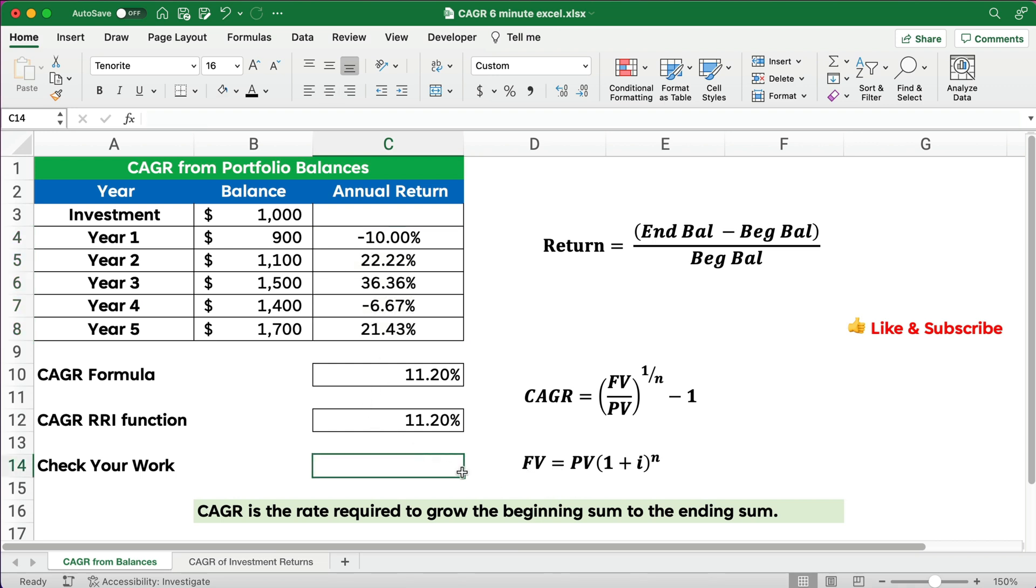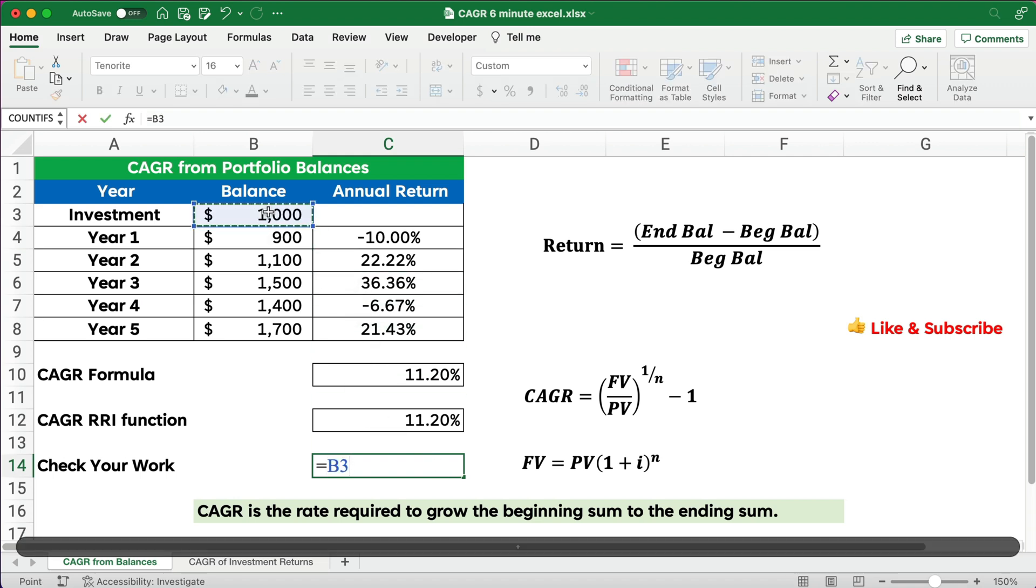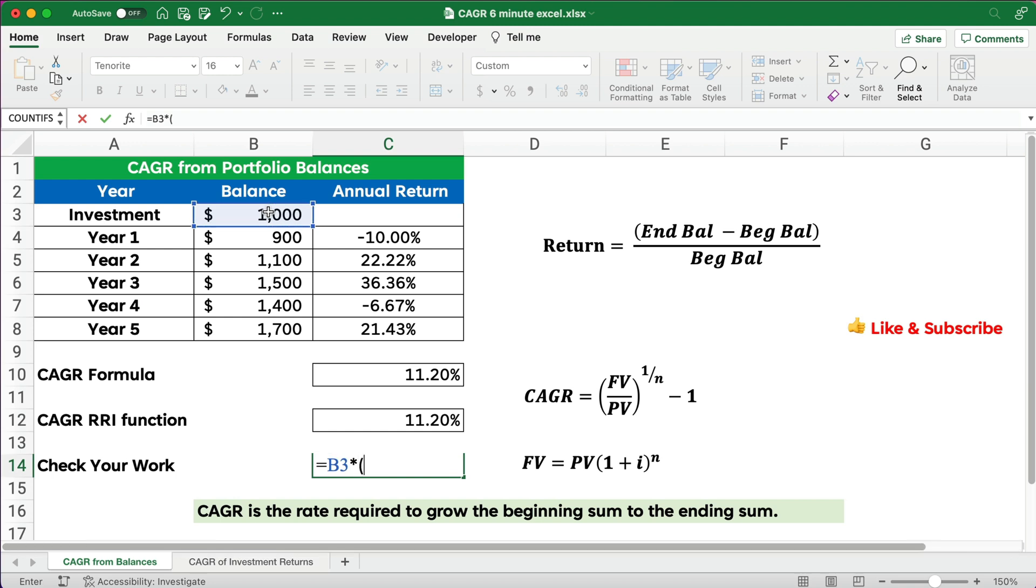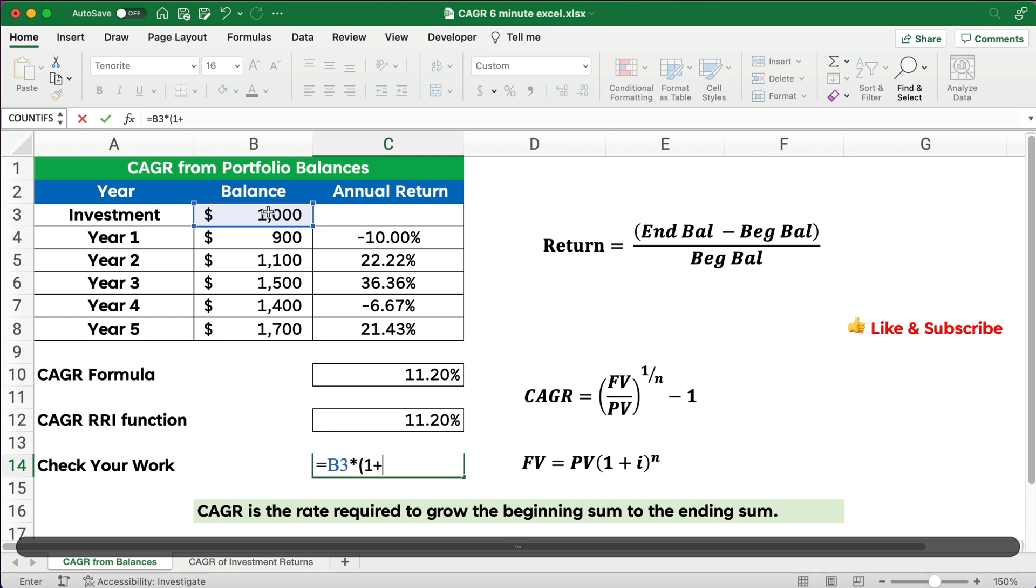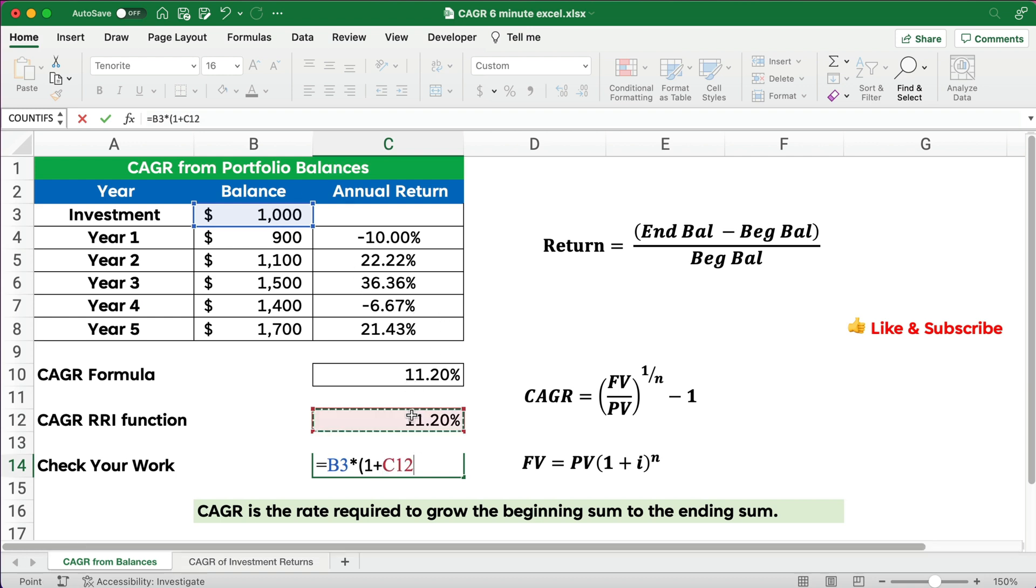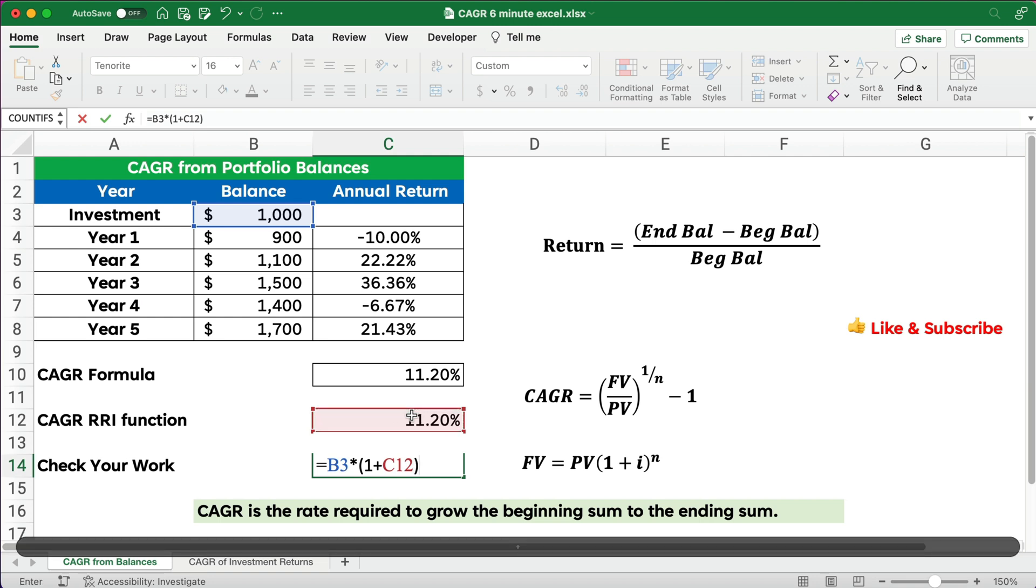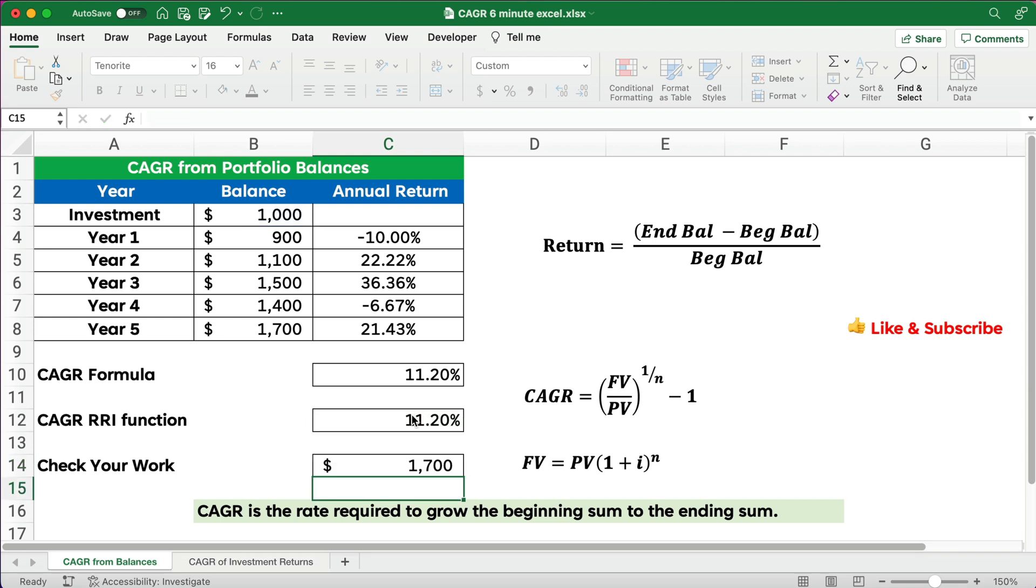Future value equals the present value. So we're going to take the present value times 1 plus I, so 1 plus the compounded annual growth rate, the 11.2%, close the parenthesis, and then we're going to do it to the exponent of the fifth power. So to the fifth power. Now, so we've grown the 1,000 to the 1,700. So we know that is the rate required to grow it. So that's the compounded annual growth rate, or that's CAGR.